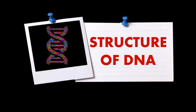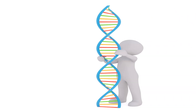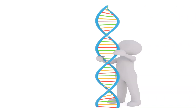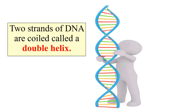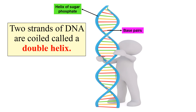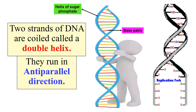Now let's discuss the structure of DNA. DNA consists of two strands and these strands are coiled with each other. The outer portion is known as the sugar-phosphate helix while the interior is formed of the bases. These two strands run in an anti-parallel direction, meaning one strand runs in the 5' to 3' direction while the other strand runs in the opposite direction.